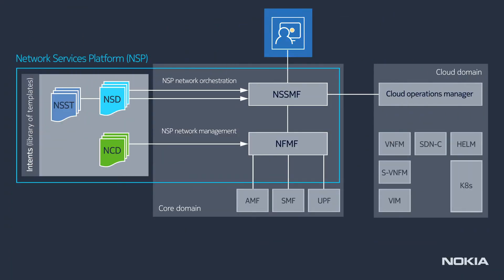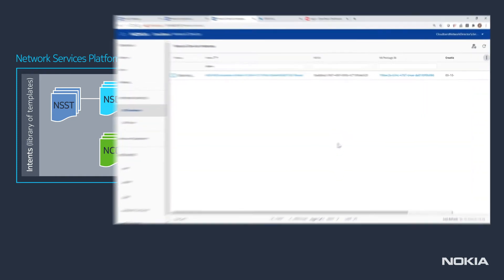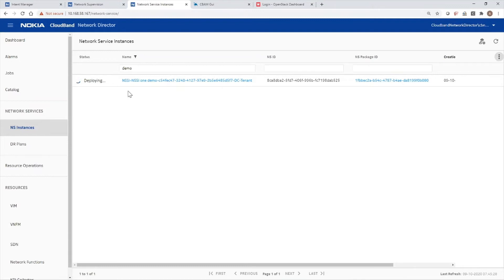The NSP network orchestration intercepts this request to identify what Network Slice Subnet Template to use. From this template, the NSP knows what Network Service Descriptors to trigger, and it auto-generates inputs to them. The Cloud Operations Manager parses the Network Service Descriptors to deploy the network functions and connect them. The first Network Service Descriptor is being executed to configure the data center tenants in OpenStack — the tenant identifies the owner of the core network slice.